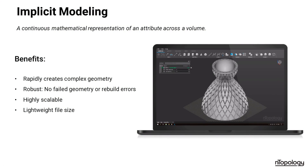As we just saw in that live demonstration, it really showcased the core benefits of implicit modeling: the ability to rapidly create complex geometry, no failed geometry or rebuild errors, design changes at any point in the design process, and something that is tightly scalable and extremely lightweight to work with. I'm going to pass this back over to John Graham to moderate a Q&A session.